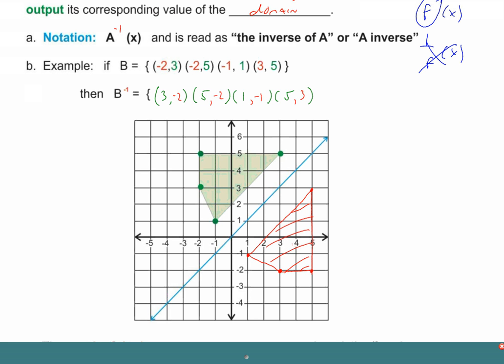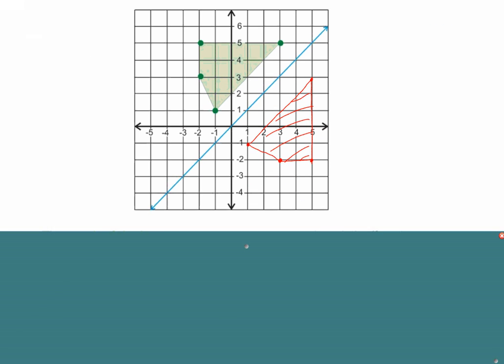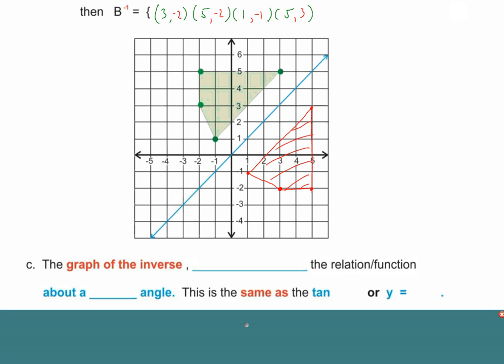So what can you tell me about the original shape and its inverse? Reflected. It is reflected. It's definitely a reflection. This is reflected across that diagonal line. Every inverse is this way.